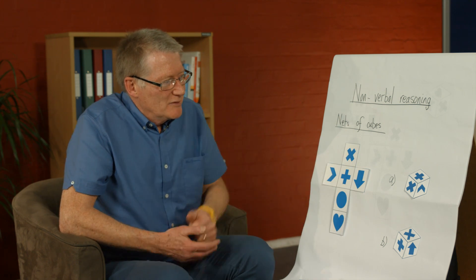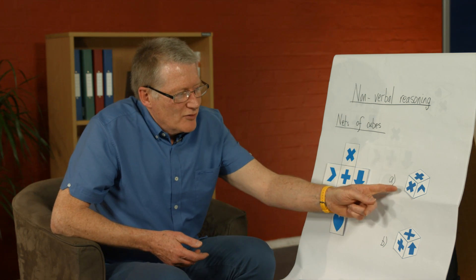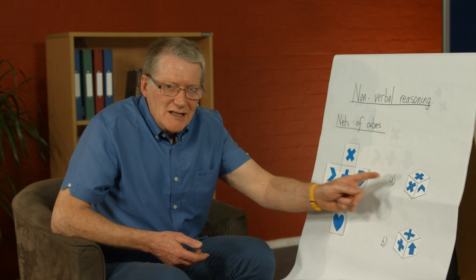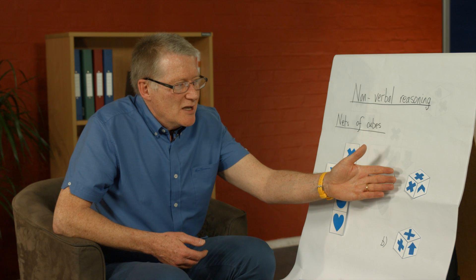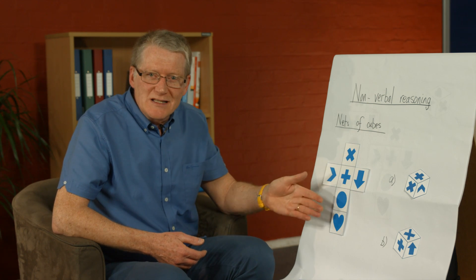We've got the net of a cube and we've got some three-dimensional representations of cubes that we want to know whether these cubes can be made from this net.